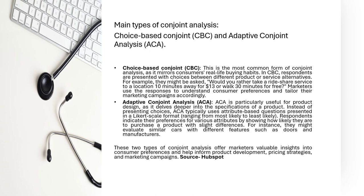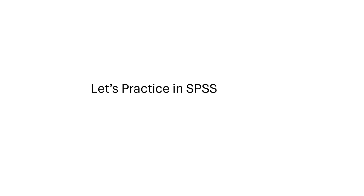Both CBC and ACA conjoint analysis offer marketers valuable insights into consumer preferences, helping inform product development, pricing strategy, and marketing campaigns. The source for this content is HubSpot, which provides all the details. The SPSS video has been uploaded separately — check there for the dataset, calculation steps, and the importance of utility scores.